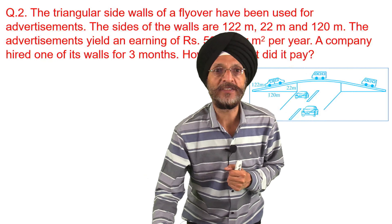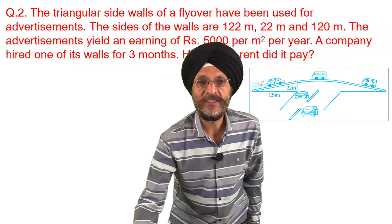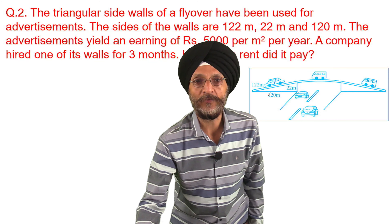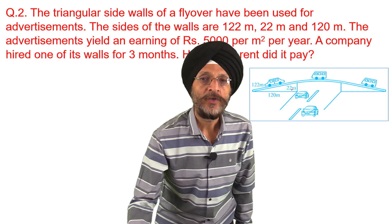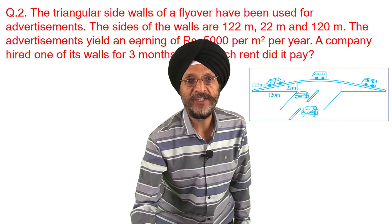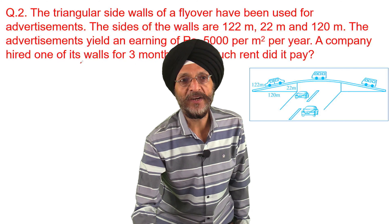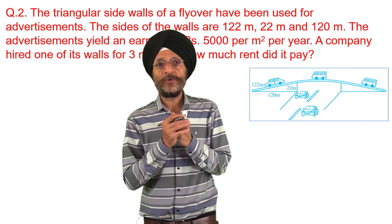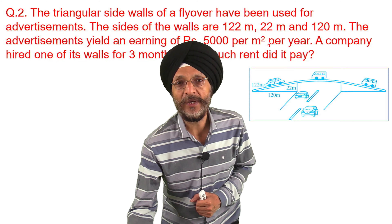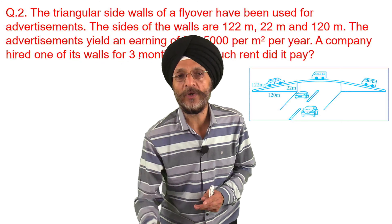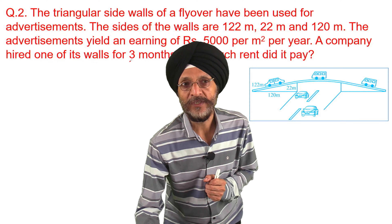The triangular sides of the walls of a flyover have been used for advertisements. In this picture, you can see the flyover and these are the side walls — this one and this one. The measurement of the walls has been given: the sides are 122 metres, 22 metres, and 120 metres. The advertisements yield an earning of Rs. 5000 per square metre per year. A company hired one of its walls for 3 months. The cost is given per year, but we need to calculate the rent for only 3 months.